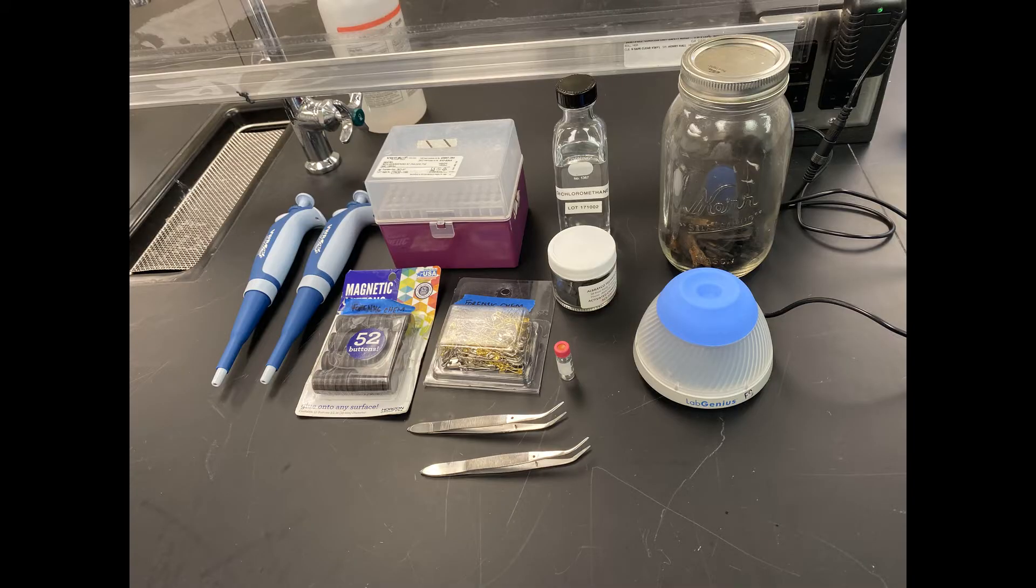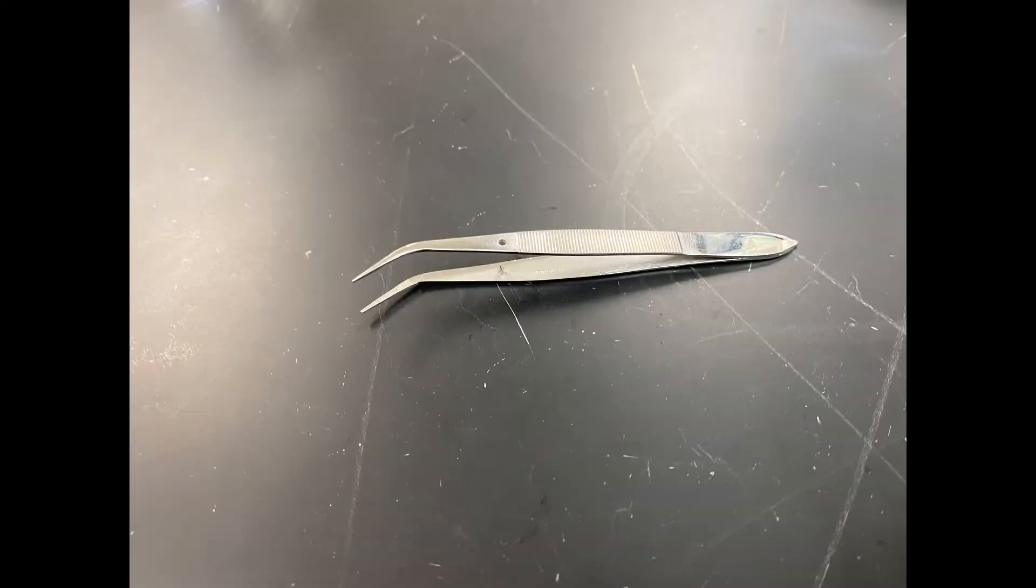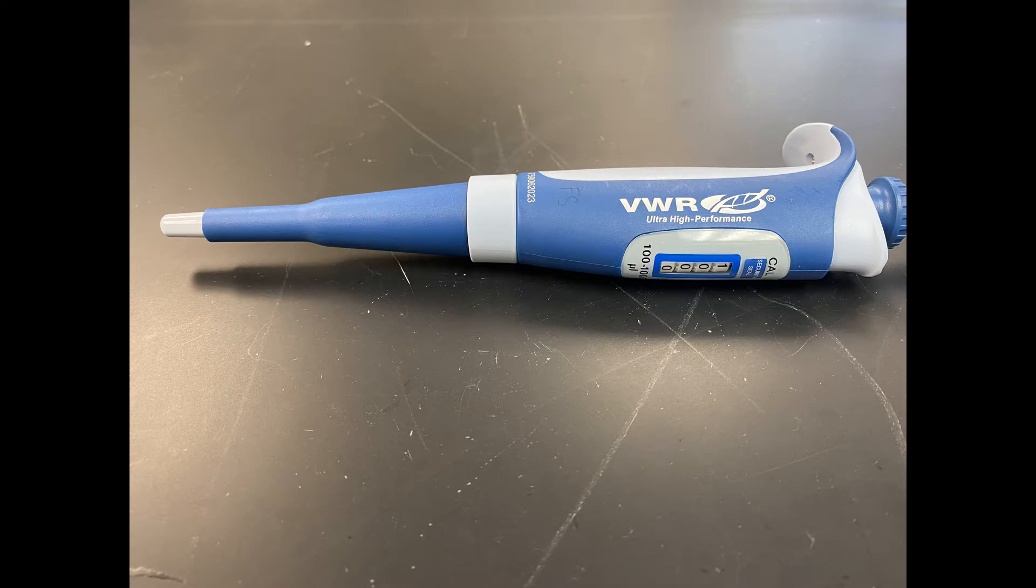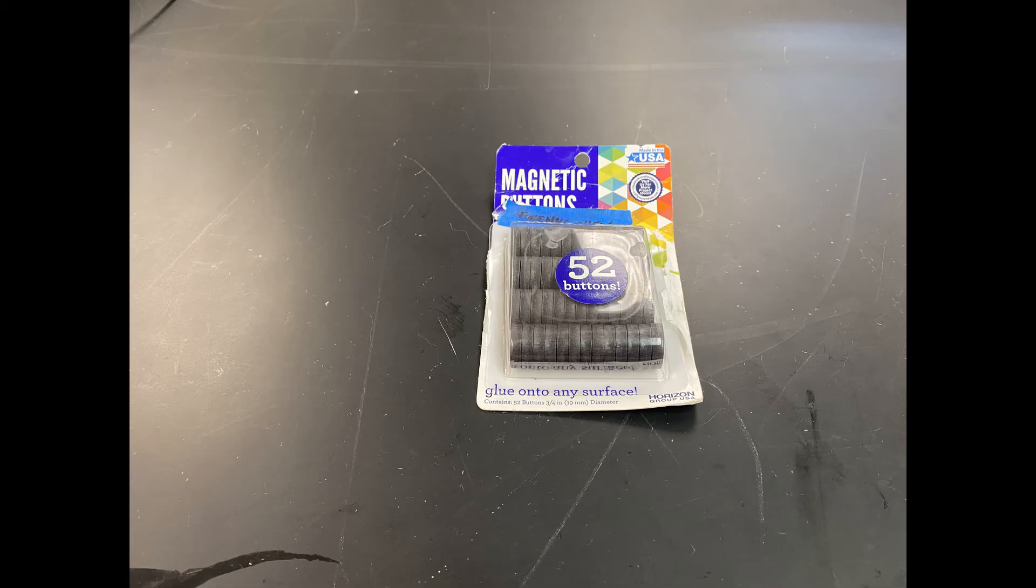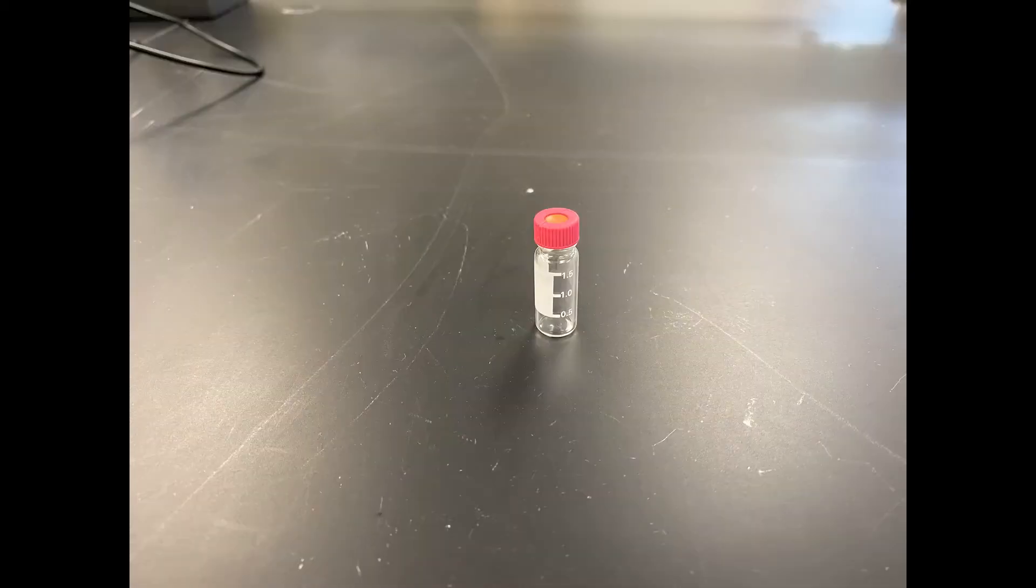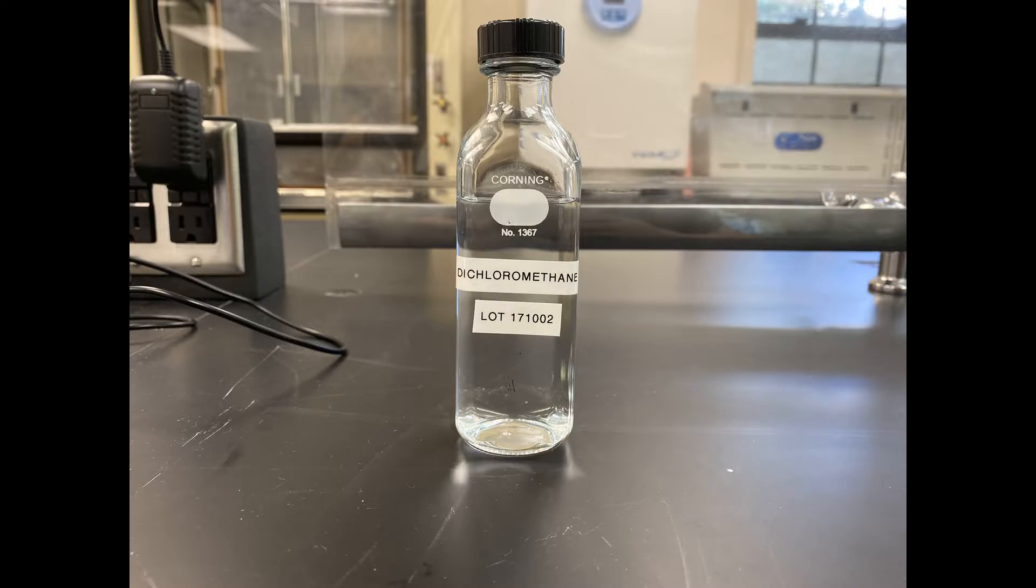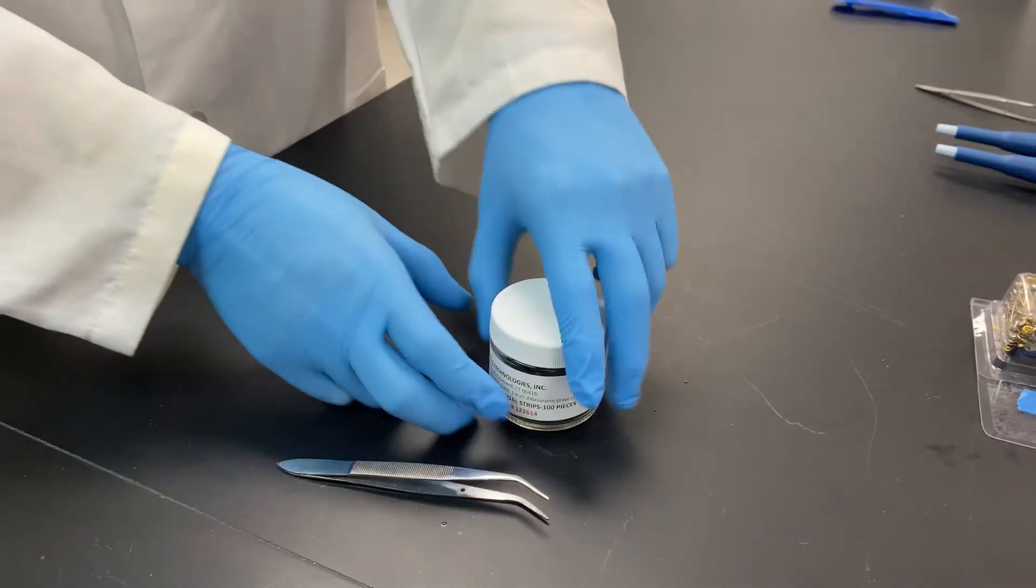In order to perform your fire debris analysis, you will need your fire debris, activated charcoal strips, tweezers, a micropipette, pipette tips, a button magnet, a safety pin, a 2 milliliter GC vial, a vortex mixer, and dichloromethane.